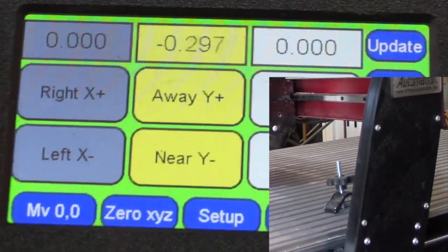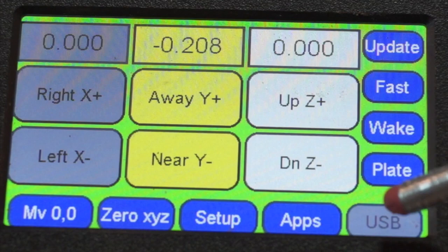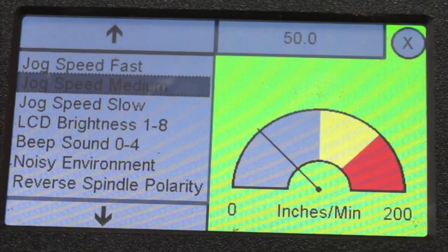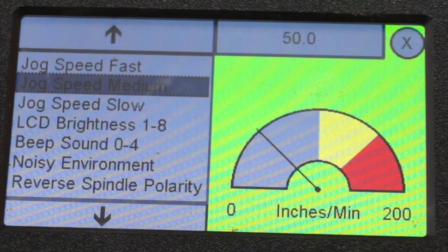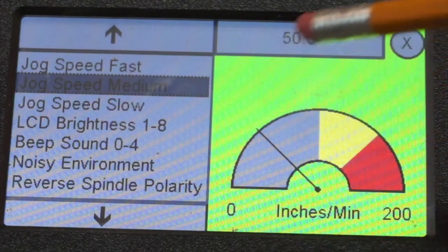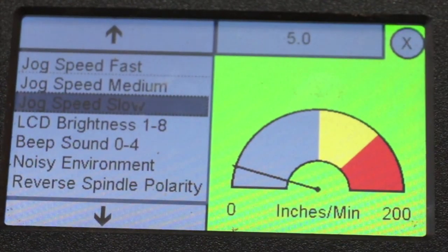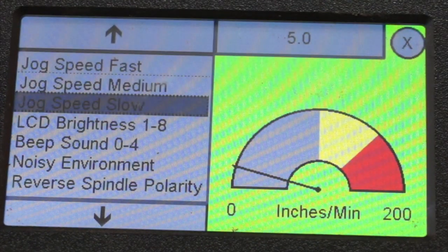And if that's not fast enough for me, let's see what my medium is set at. Let's go back to setup. Look at the medium speed. It's at 50. So I'm still fast at 100. So I can change that. My slow speed or jog speed is down to 5.